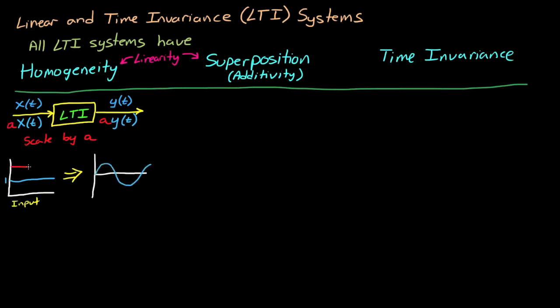And likewise, if we subjected it to a step input of 2, the output would also double to amplitude 2. Now let's say that the input x1 produces output y1, and input x2 produces output y2.